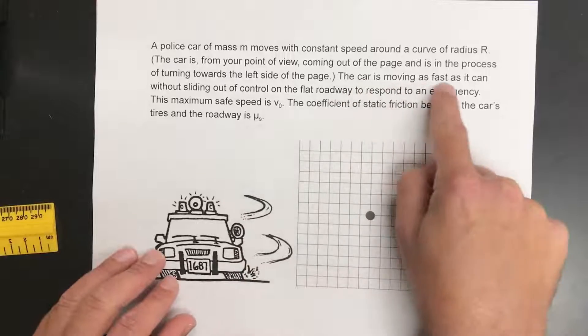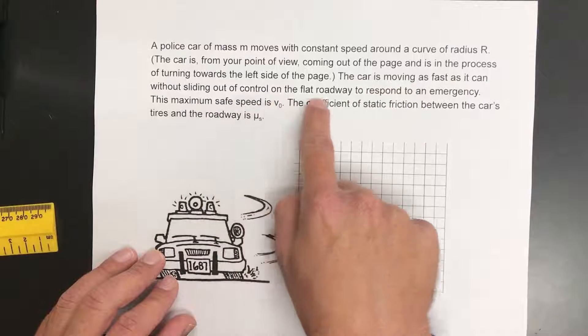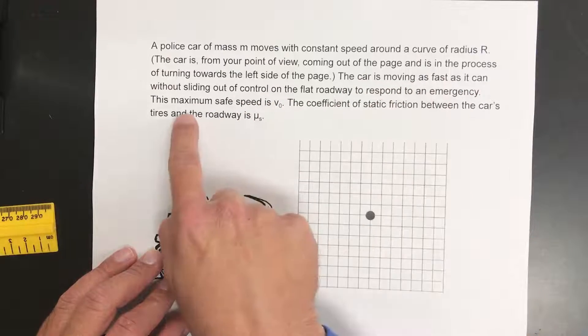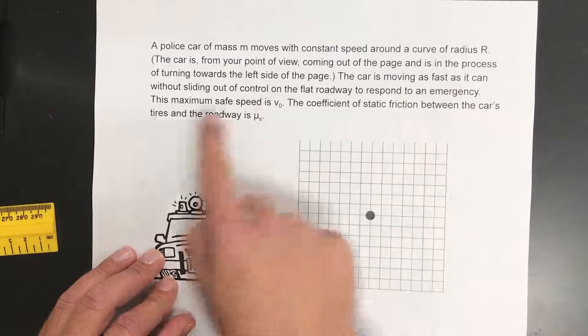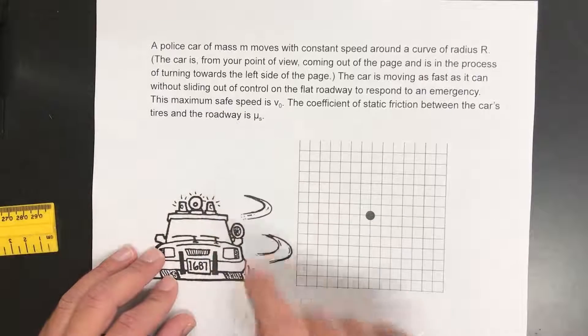So the car is moving as fast as it can without sliding out of control on a flat roadway to respond in emergency. The maximum safe speed is V0. The coefficient of static friction between the car's tires and the roadway is mu sub s.